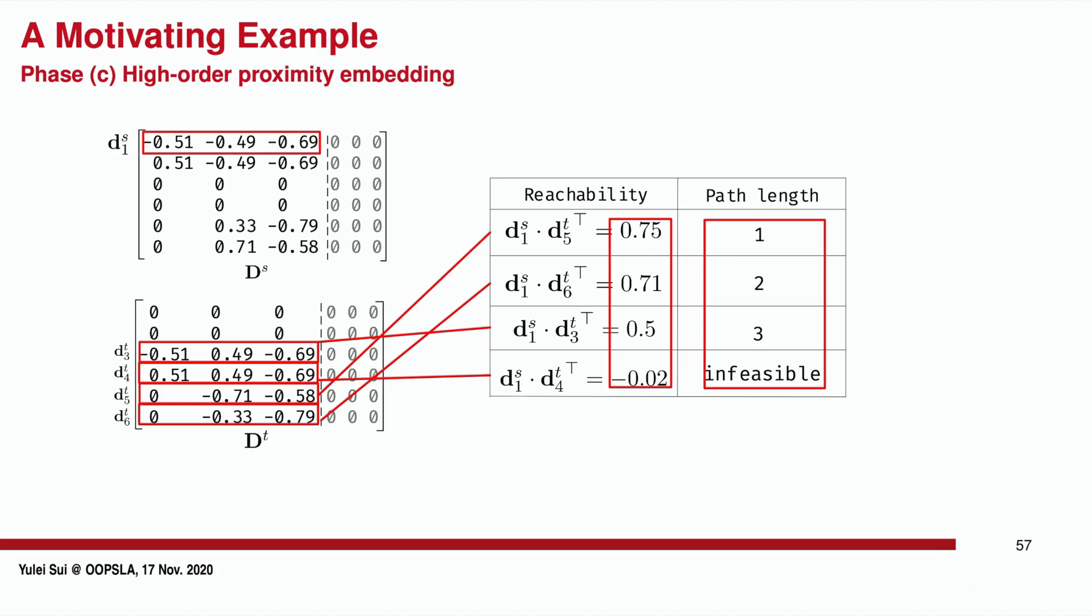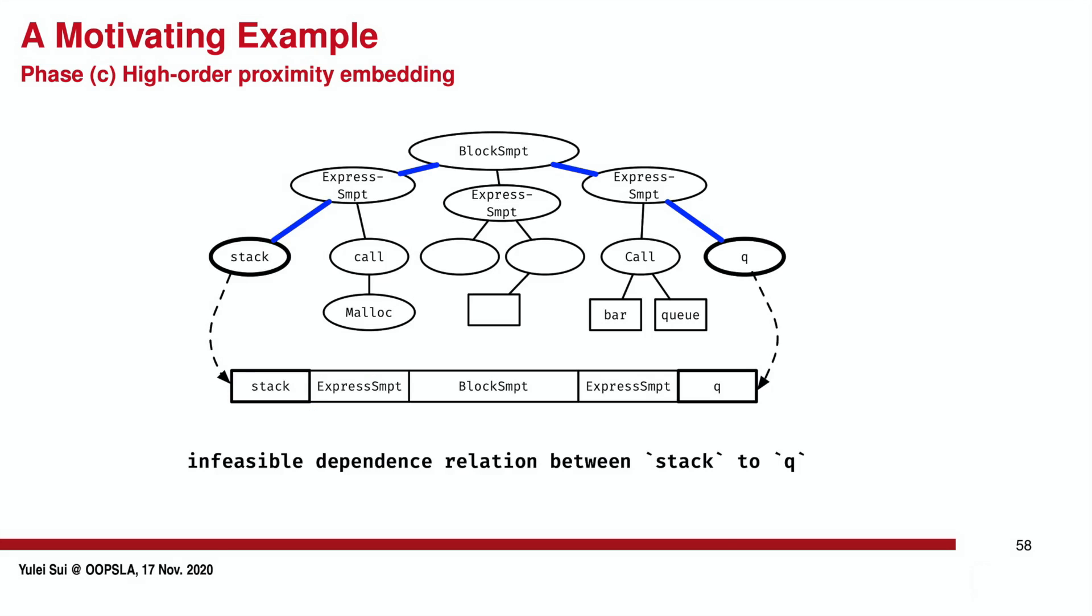However, without context-sensitive analysis and asymmetric transitivity preservation, the AST-based approach will collect paths from the undirected tree structure, which will produce an infeasible dependence relation between stack and Q.